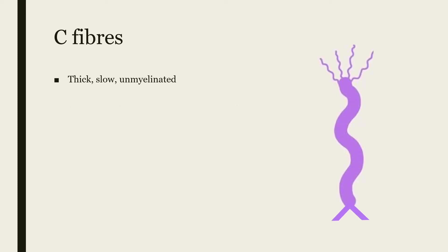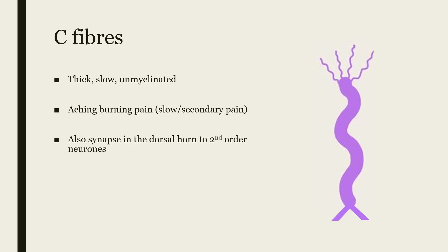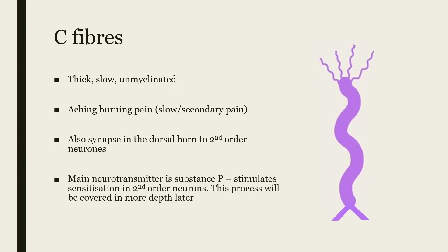In contrast to the A fibers, C fibers are thin — about 1.5 micrometers in diameter — and are unmyelinated, thus conducting their impulses more slowly than A fibers. They are associated with an aching, burning pain sensation, known as slow or secondary pain. They also synapse in the dorsal horn to second-order neurons. The main neurotransmitter of C fibers is substance P, which stimulates sensitization in second-order neurons. This central sensitization will be covered in more depth later. They do also release some glutamate.